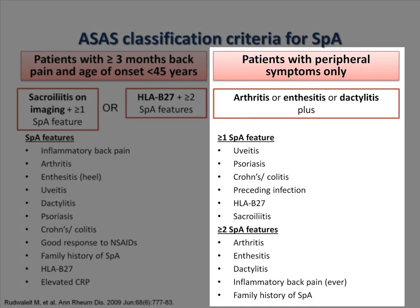Patients can also be classified as having spondyloarthritis if they have peripheral symptoms only. These patients would need to have arthritis, enthesitis, or dactylitis, and either one or two additional spondyloarthritis features depending on what they present with.